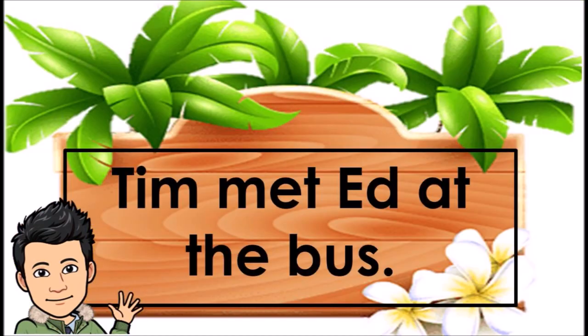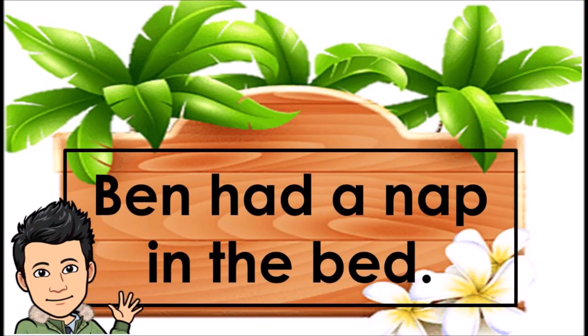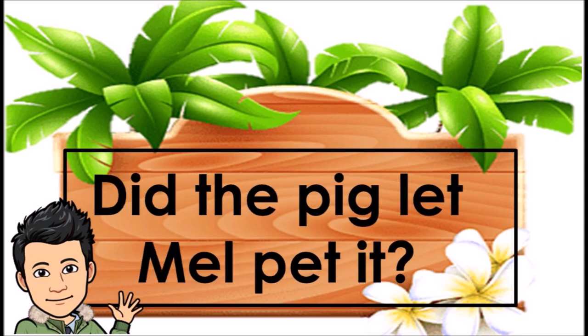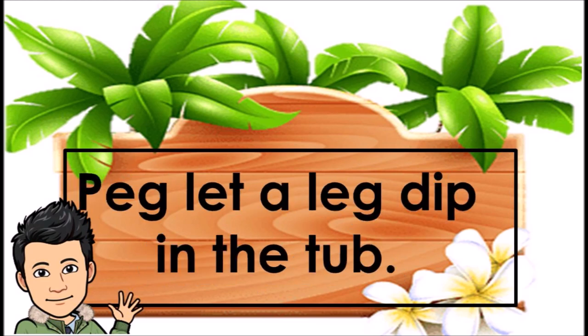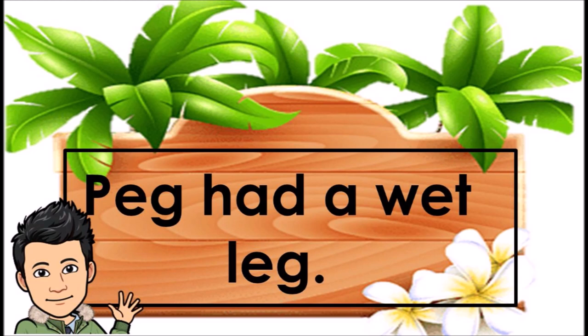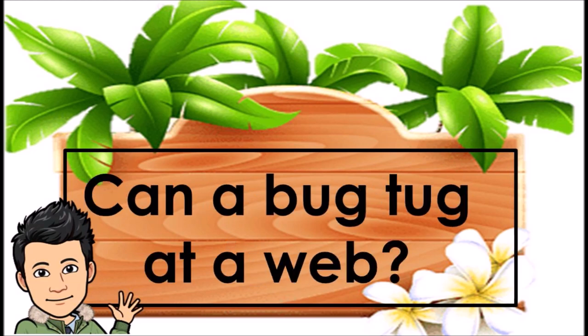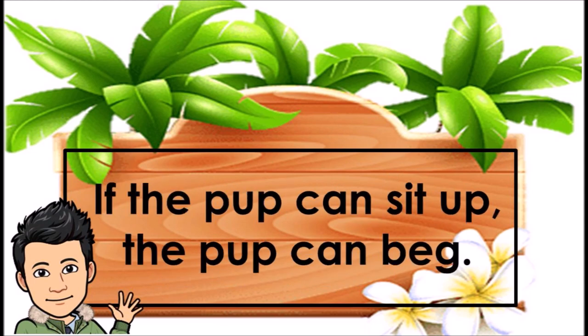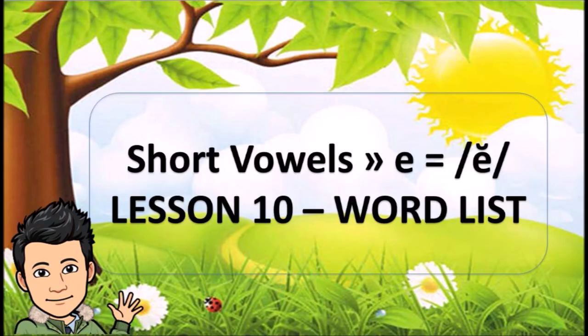Lesson 9. Sentences: Tim met Ed at the bus. Ben had a nap in the bed. Mel had a pet pig in a pen. Did the pig let Mel pet it? Peg let a leg dip in the tub. Peg had a wet leg. Can a bug tug at a web? Can a bug rip up a web? If the pup can sit up, the pup can beg. Short vowels: E equals E.